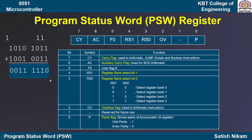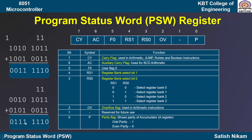Let us consider another example. If we perform this addition, we get a result which is stored in the accumulator. Counting the number of ones: there are a total of 6 ones present in the accumulator. Since 6 is an even number, the parity flag will be 0.